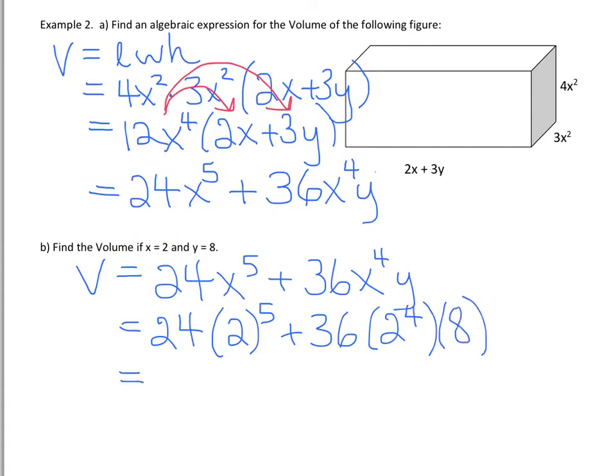And you can punch that in kind of all in one step if you want. So 2 to the power of 5 is 32. So we have 32 times 24. And then we're going to add to that 36 times 2 to the 4, which is 16, times our 8. And you should get 5,376.